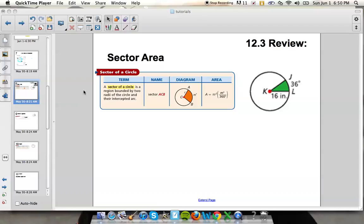Sector area is found by taking pi times your radius squared times the measurement of your arc divided by 360. The one way that you can remember that you have to use pi r squared is to find the area of a circle you use pi r squared. So that's one way that you can remember here.